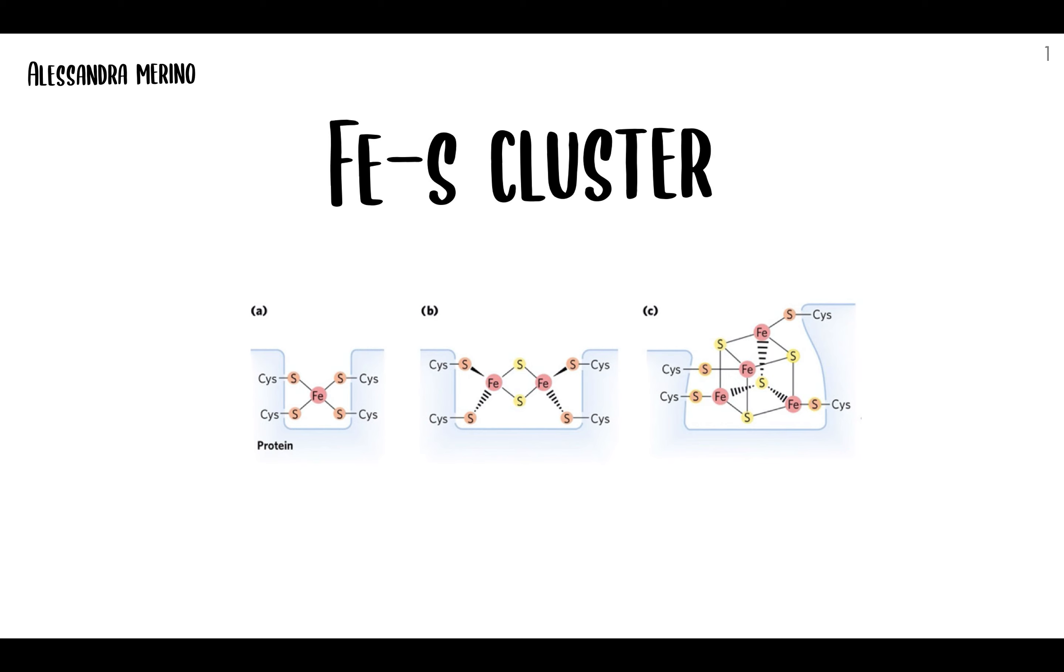And the overall pathway of electrons in the chain is from NADH to flavoproteins, ubiquinone, iron-sulfur protein, cytochromes, and finally to molecular oxygen. But we're not going to get too much into that. We're mainly focusing on the clusters themselves.